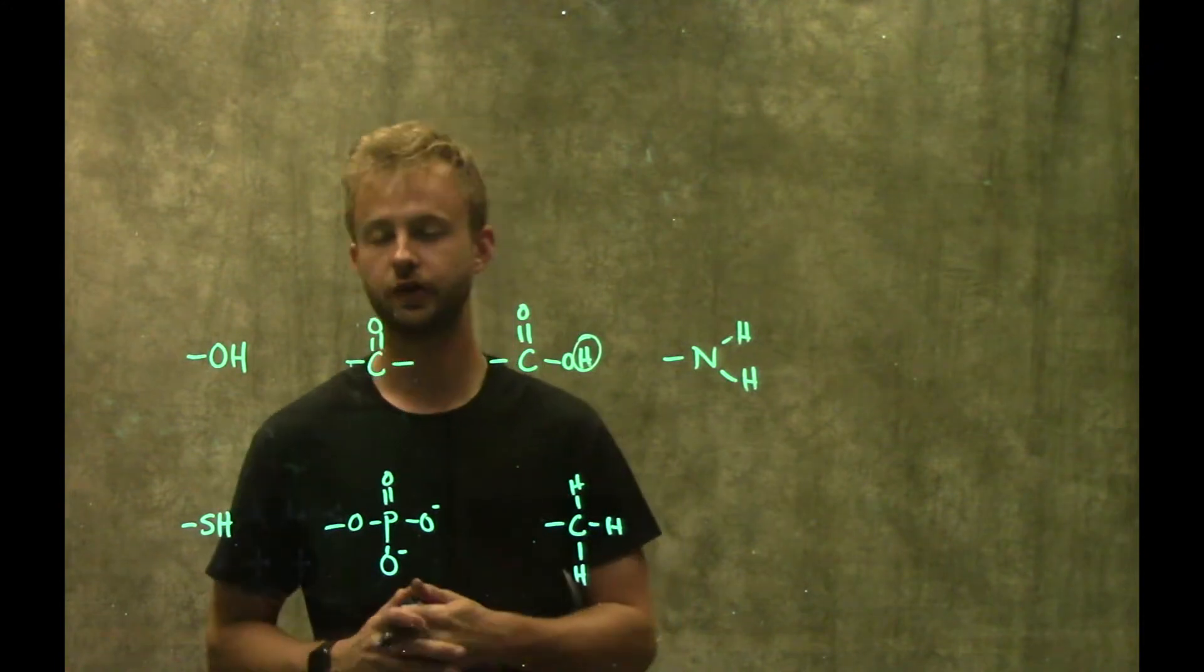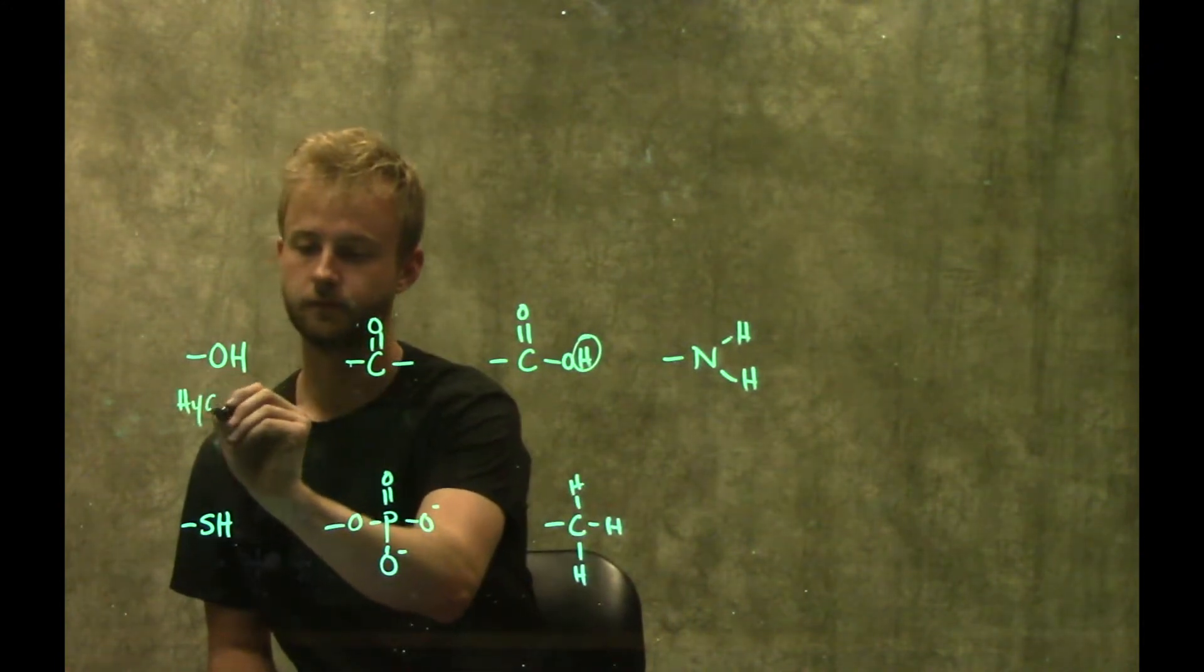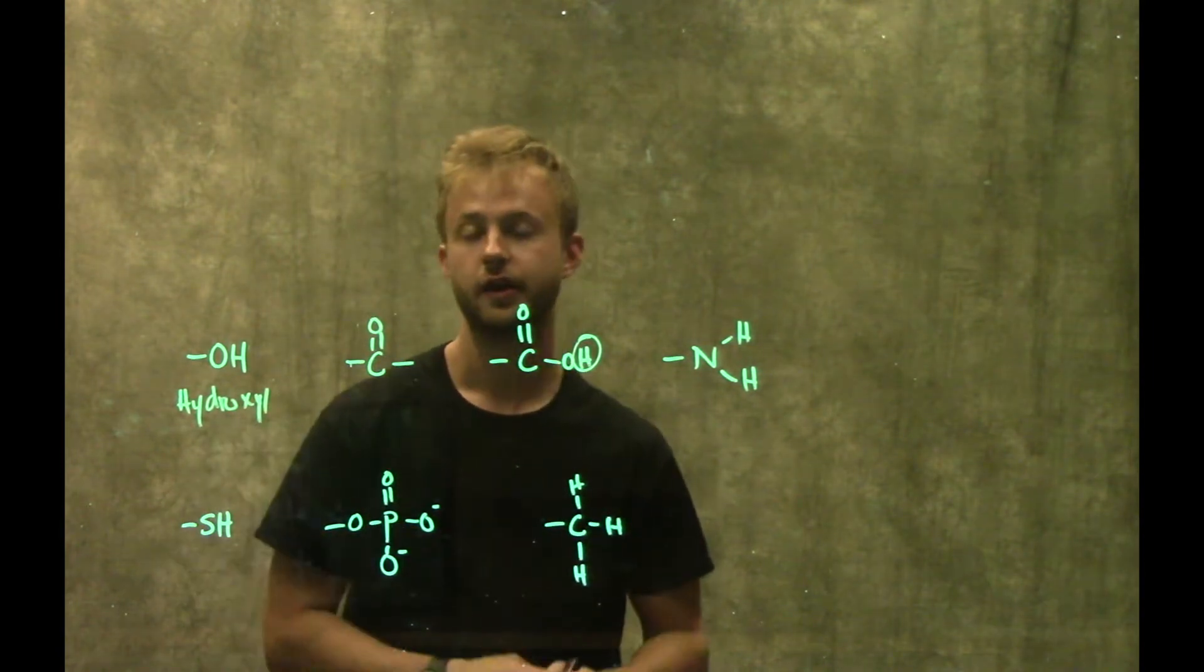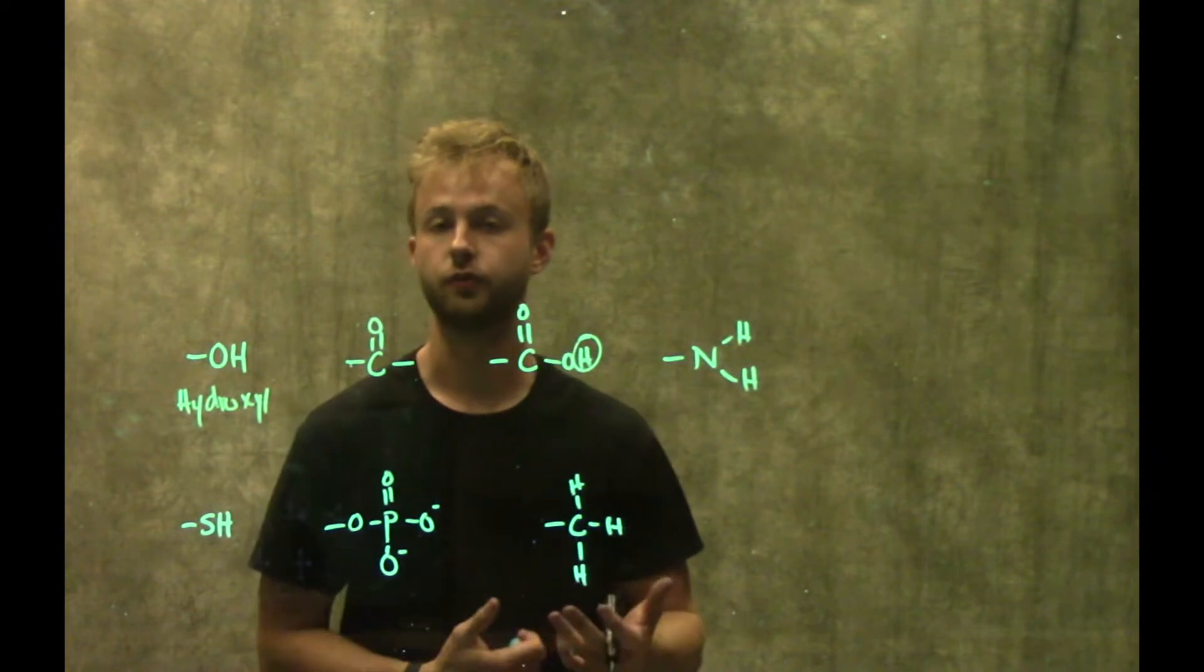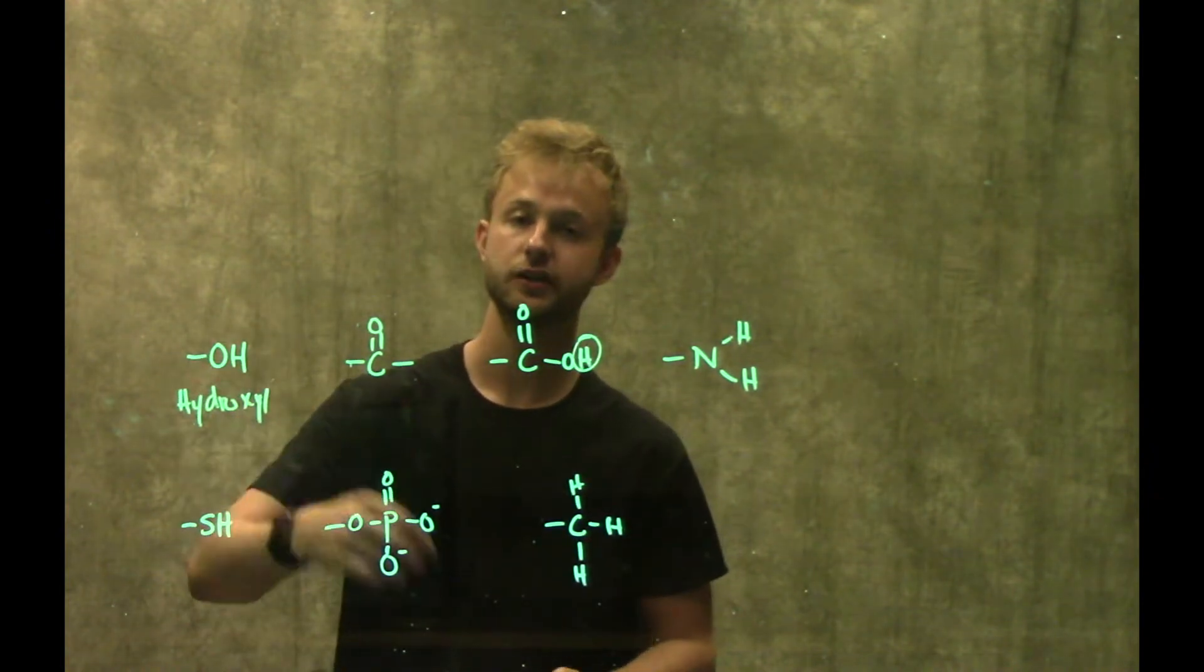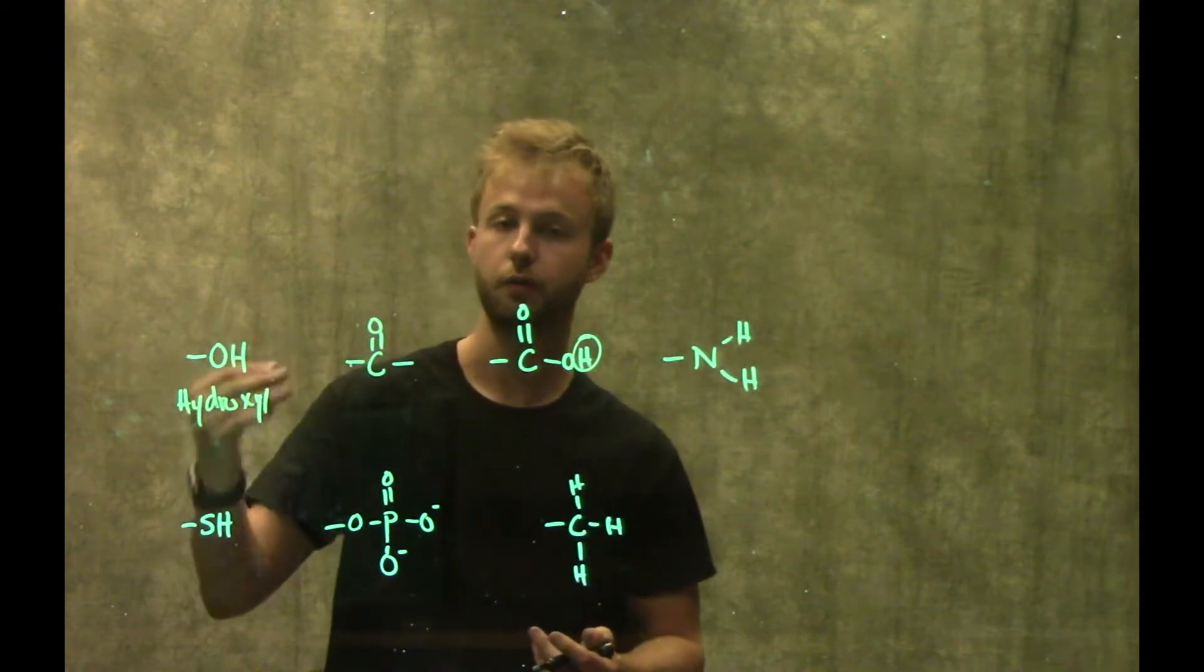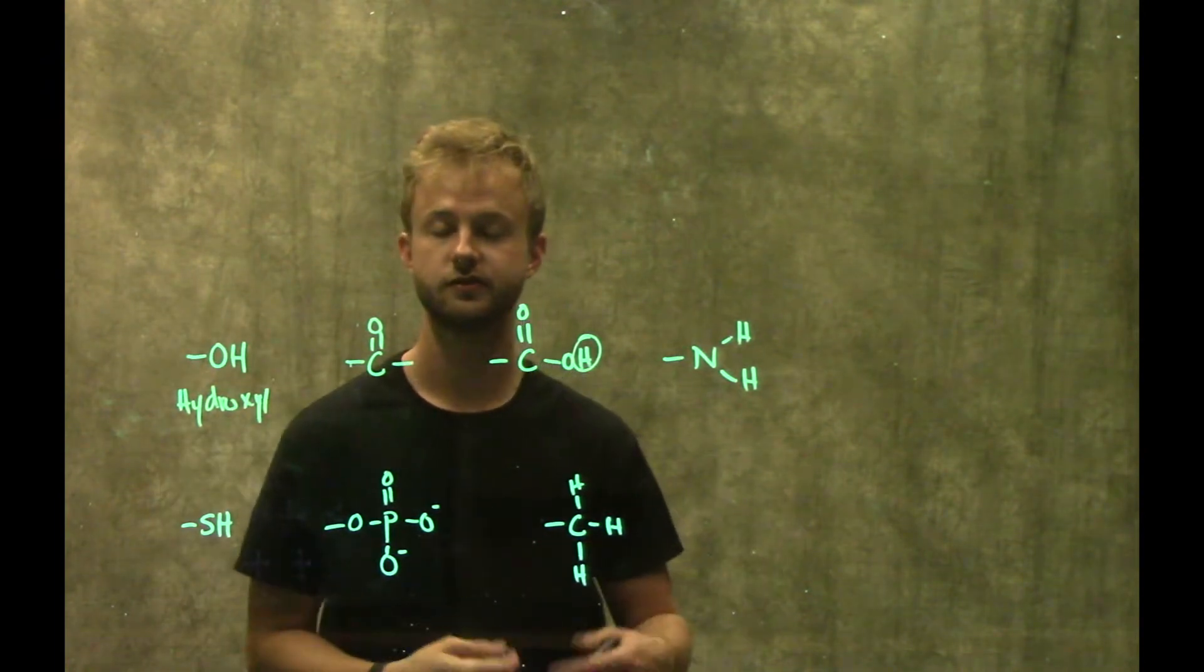The first functional group we're going to look at is a hydroxyl group. Hydroxyl groups are useful because when you attach this to a molecule, it helps that molecule to be able to interact with water because the bond between oxygen and hydrogen is a polar covalent bond, which makes this group polar so it can interact with other polar substances like water.